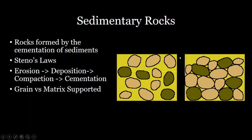A sediment can either be grain or matrix supported. The matrix is the material that actually causes cementation to occur — this can be calcium carbonate, for example. A matrix-supported sedimentary rock has a lot of matrix material and the grains don't necessarily touch each other, whereas in grain-supported sedimentary rocks, the sediment grains touch each other and the matrix just fills the void spaces between them.